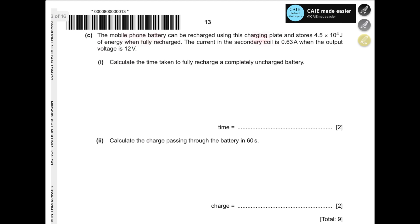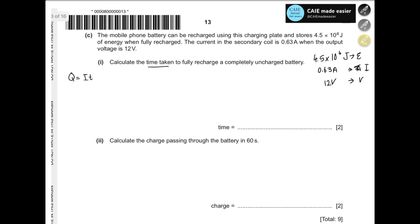A mobile phone battery can be recharged using a charging plate and stores 4.5 × 10⁴ joules of energy when fully recharged. The current in the secondary coil is 0.63 ampere when the output voltage is 12 volts. Calculate the time taken to fully charge a completely uncharged battery. We have the energy stored, the current of 0.63 amps, and the output voltage of 12 volts. We know Q = IT and E = voltage × charge, so we can equate both to find time.